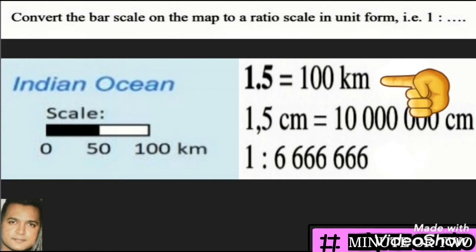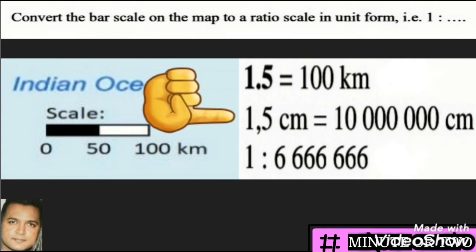In other words, 1.5 centimeters on the map is equal to 100 kilometers on the ground. When leaving scales in the form of 1 is to something, we generally express both sides in centimeters. From conversion, we know there are 100,000 centimeters in one kilometer. So we take the 100 kilometers and multiply it by 100,000 to get 10 million centimeters.